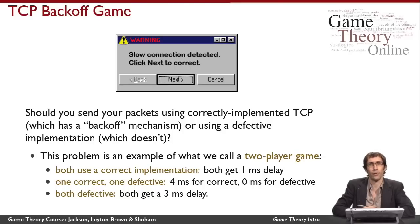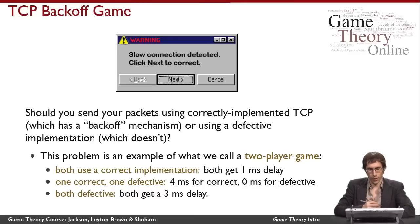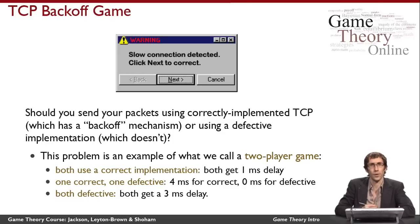A game in general is any interaction between two or more people where the outcomes of the interaction depend on what everybody does, and everybody has different levels of happiness for the different outcomes. Let's think about a two-player version of this interaction, which a game theorist would call a two-player game. In the two-player case, we have a question of whether each of the players should use a correct implementation, or one uses correct and the other uses defective, or both use defective implementations.